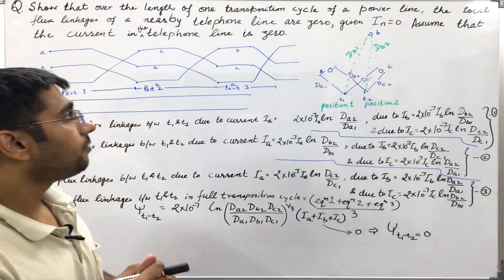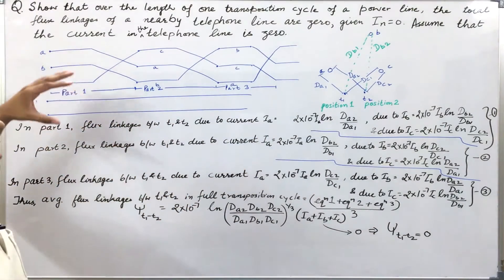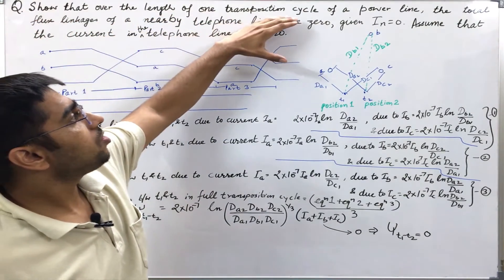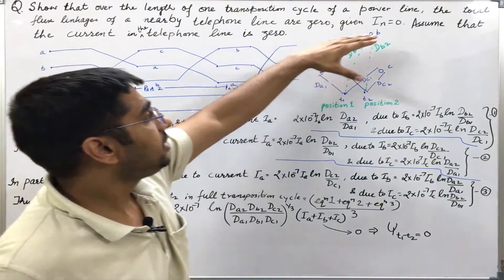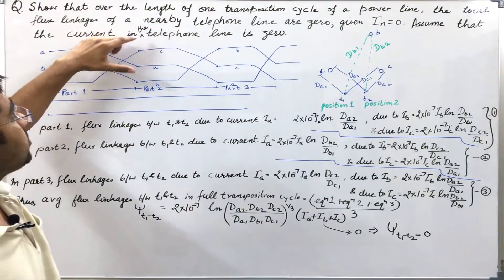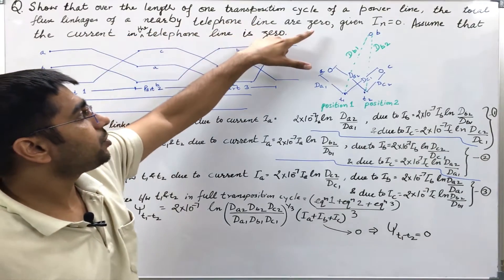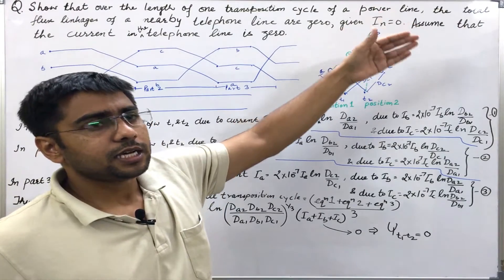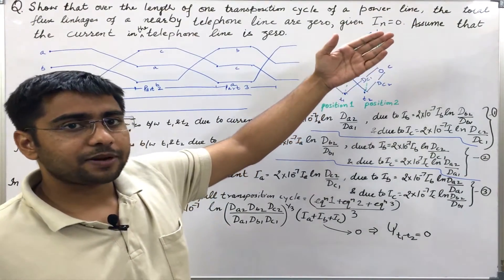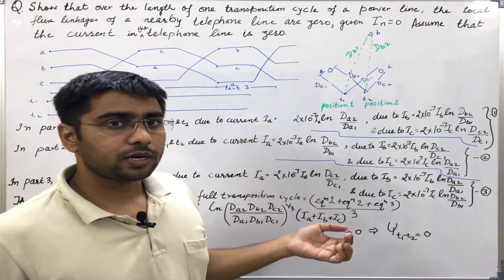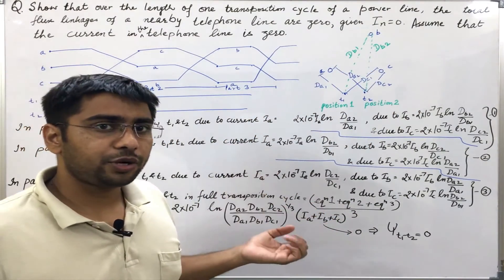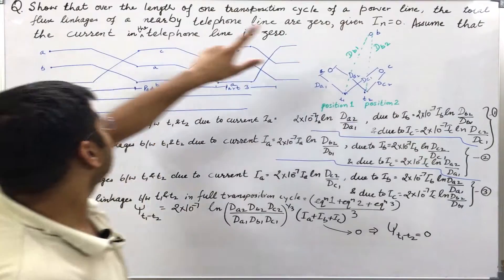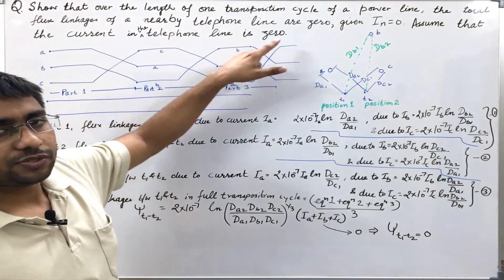What is given in the question? I have to prove that over the length of one transposition cycle of a three-phase power line, the total flux linkages of a nearby telephone line are zero. Given that the neutral current is zero, that is either the currents are balanced — Ia plus Ib plus Ic is equal to zero — or there is no path for the neutral current to flow. We also assume that the current in the telephone line is zero.